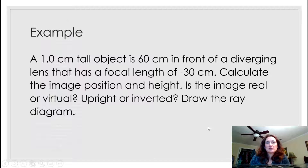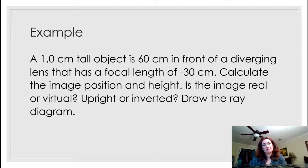Let's do an example problem with the diverging lens. We have a one-centimeter-tall object that's 60 centimeters in front of a diverging lens with a focal length of minus 30 centimeters. Calculate the image position and height. Is the image real or virtual? Upright or inverted? Then draw the ray diagram.